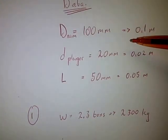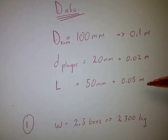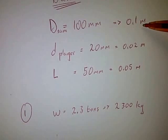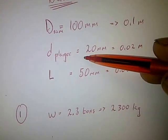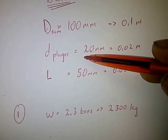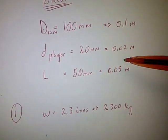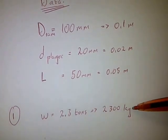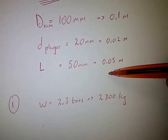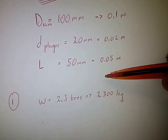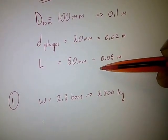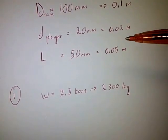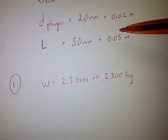Our data: the diameter of the ram is 100 millimeters, which we convert into meters — 0.1 meters. The diameter of the plunger is 20 millimeters, which converts to 0.02 meters. The stroke length is the distance moved by the plunger per stroke.